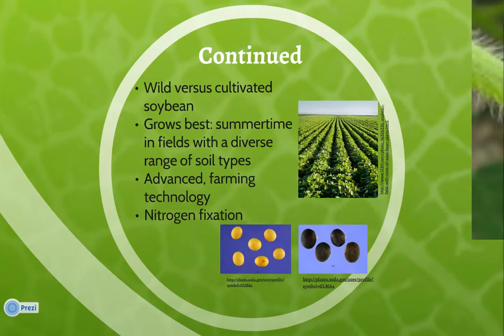Soybean plants grow best in the summertime in fields with a diverse range of soil types. Today, advanced farming methods are used to grow soybeans, in which machines take the place of humans in the processes of sowing and harvesting. Soybeans are often grown with another crop, such as sunflower, maize, or cotton, because of its valuable role in nitrogen fixation of the soil.